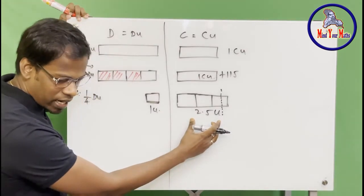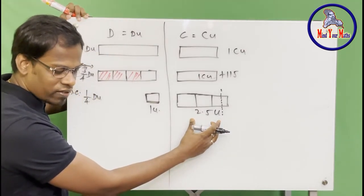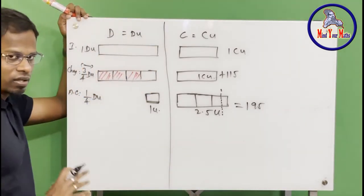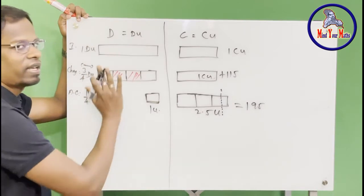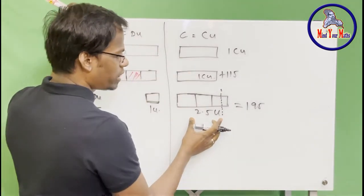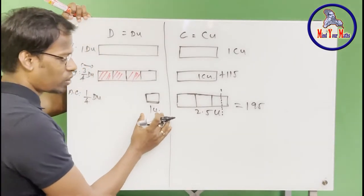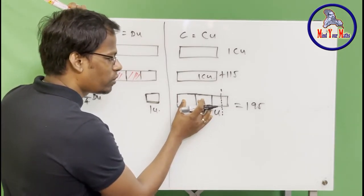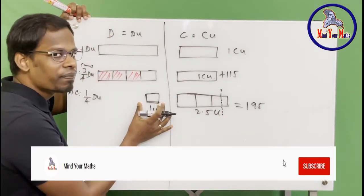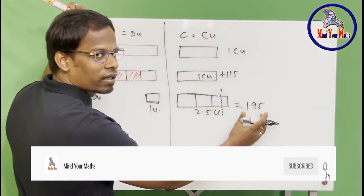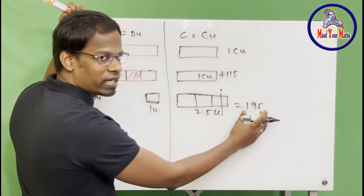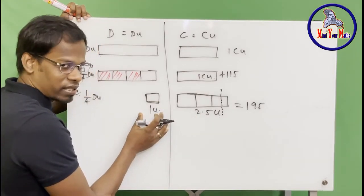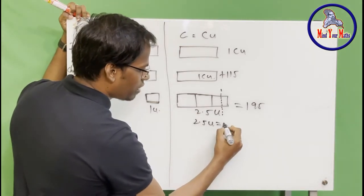It is also given that there were 195 chickens after that, which means 2.5 units equals 195 chickens. The unit size on the left and right sides after the change is the same. We know the end value after the change is 195, so from here we can find the size of one after-change unit. So 2.5 units equals 195 — let's find what one unit is.